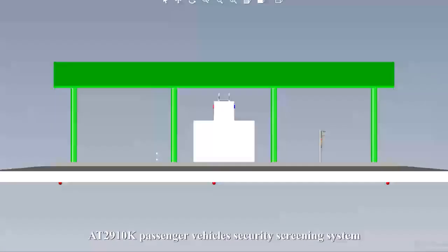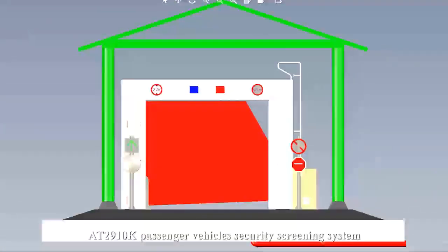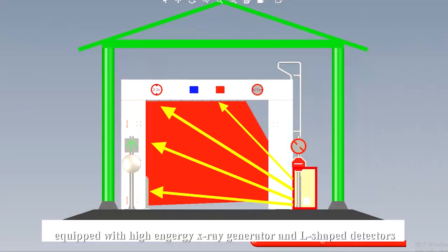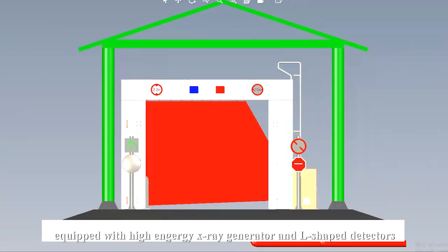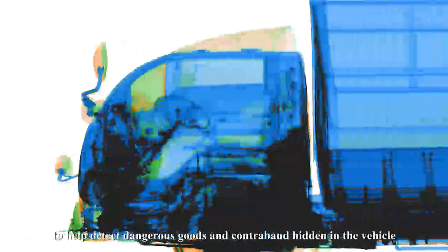AT-29K Passenger Vehicle Security Screening System, equipped with high-energy X-ray generator and L-shaped detectors, provides high-definition X-ray images to help detect dangerous goods and contraband hidden in the vehicle.